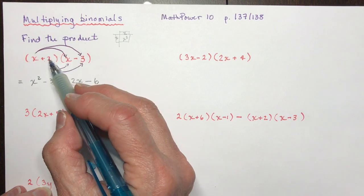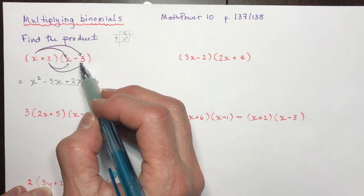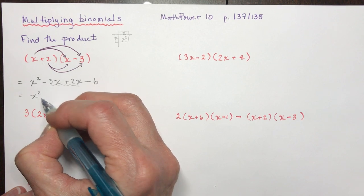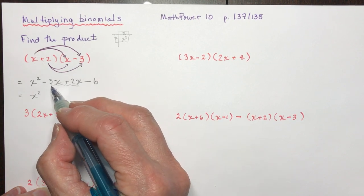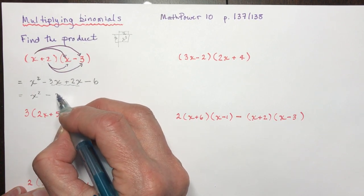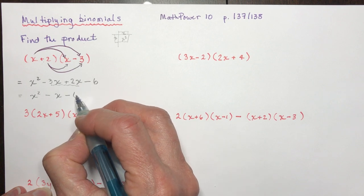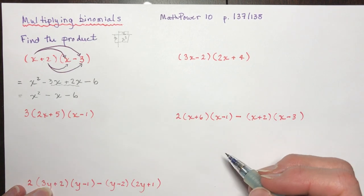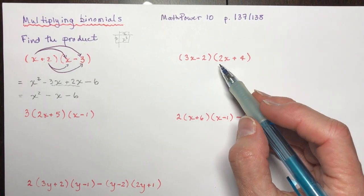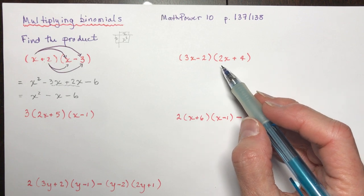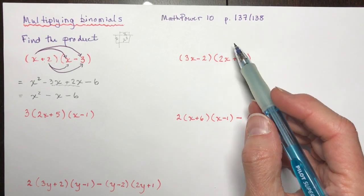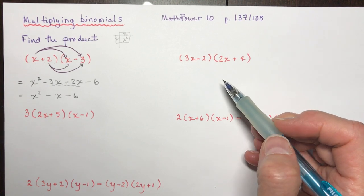Now all you have to do is combine the like terms. When you multiply a binomial by a binomial you should get a trinomial — going from two terms to three terms. So minus three plus two is minus one, giving minus x, and then minus six. If you're following along, write it down and see if you can do it yourself.